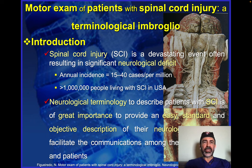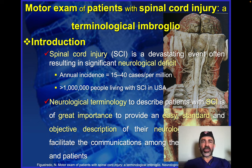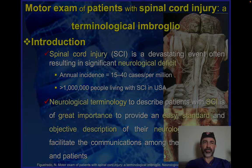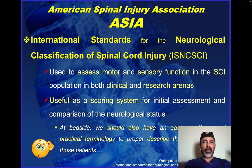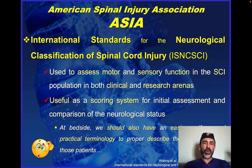Spinal cord injury is a very common and devastating event which affects thousands of people all over the world. A new terminology is very important to describe those patients among health professionals, even for the families. The American Spinal Injury Association, or ASIA, has a very nice scoring system in which they describe properly the motor and sensory deficits for spinal cord injury.